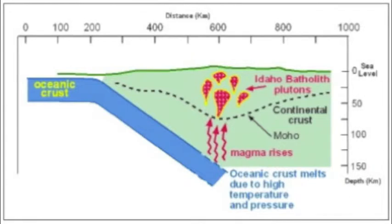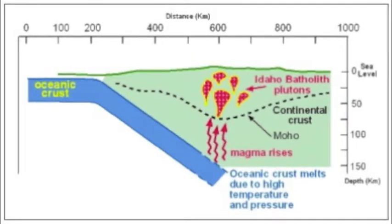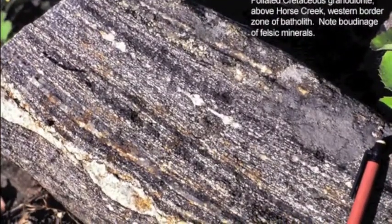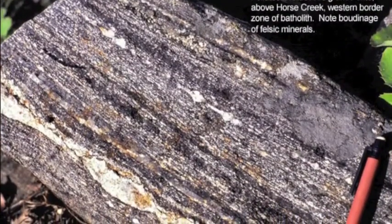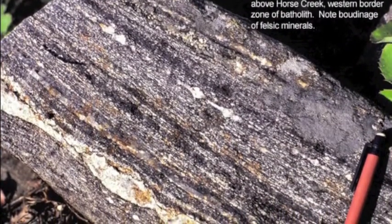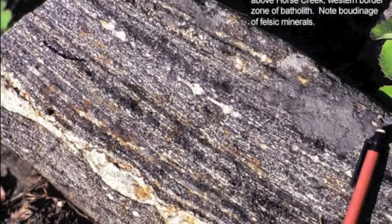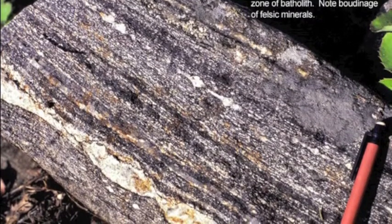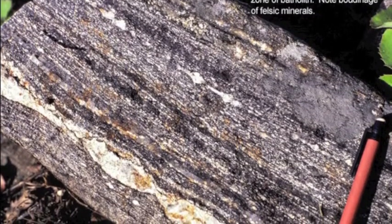The Eocene Challis volcanic rocks rest uncomfortably on the middle depths of the Atlanta Lobe of the batholith. This demonstrates the Paleogene uplift.